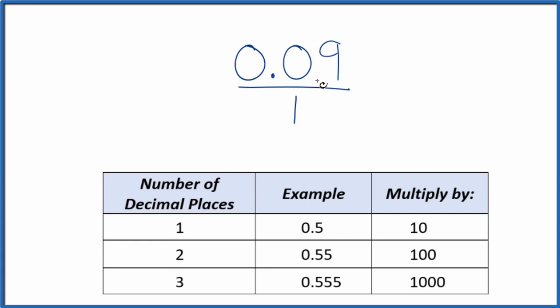Next, we want to get this 0.09 to be a whole number, and we can do that by multiplying by 100, because 100 times 0.09 equals 9. So that's a good start. Note when we have two decimal places, we multiply by 100.